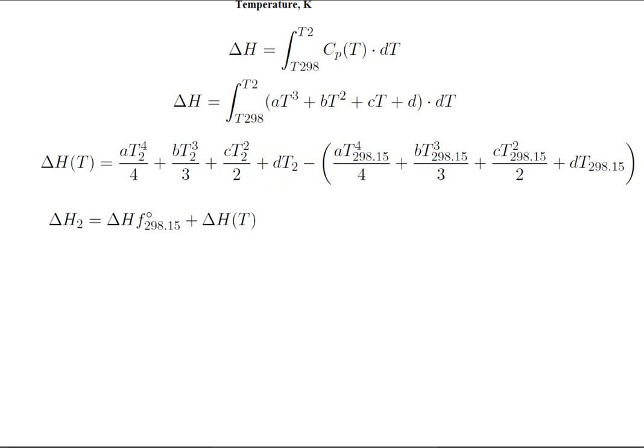A very important note is that this delta H of formation of 298 was given in kilojoules per mole, but Cp that we tabulated was given in joules per mole K. Consequently, this function, delta H of T, will yield values in joules per mole. Now in order to add kilojoules to joules per mole, one of them needs to be converted.